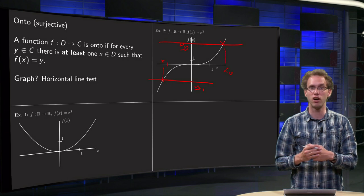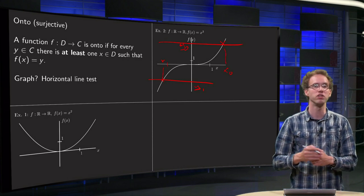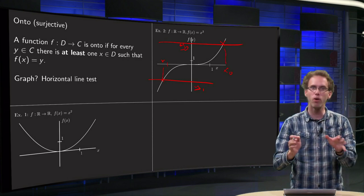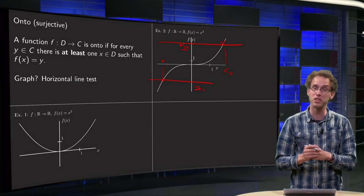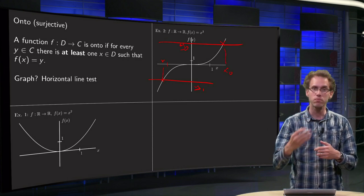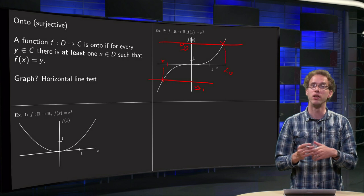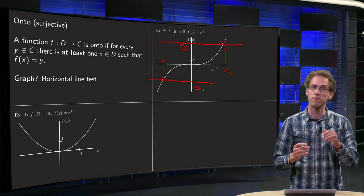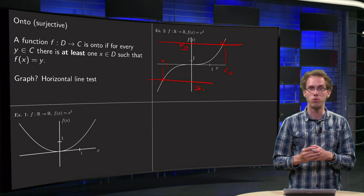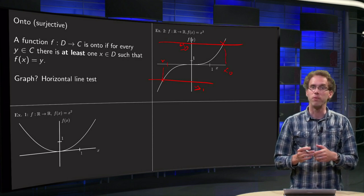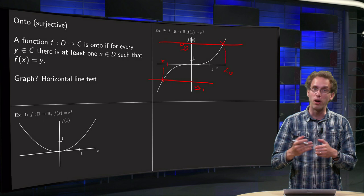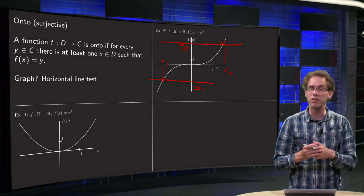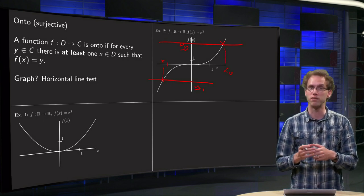You can see from the graph that you can do this for any height, you will always intersect the graph. In this case you will intersect the graph once, but that doesn't even matter. You will always intersect the graph at least once, which means that for all values in the codomain, you can always find a value in the domain such that f(x) equals that value of y. Now you know how you can see whether a function is onto or surjective.